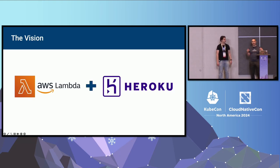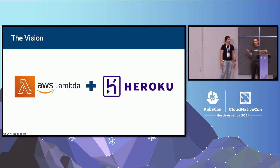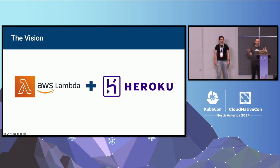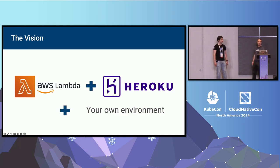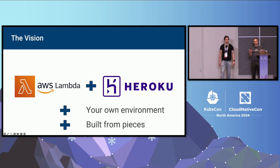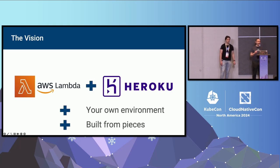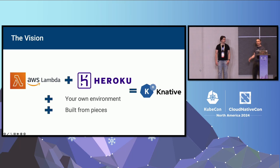The basic vision was: serverless and platform-as-a-service things were great, but they all locked you into a specific vendor, and no two companies offered the same API. If Google was going to launch a new serverless thing in 2018, it needed a distinguishing characteristic — what if you could run it on Kubernetes in your own environment, it was open source, and it was built from decomposable pieces you could plug together in the way that suited you?